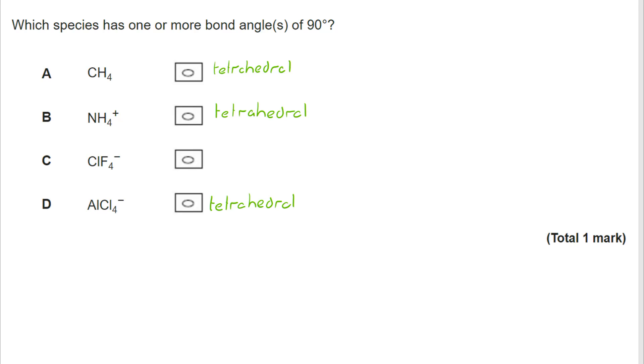AlCl4 minus, well we know that AlCl3 is trigonal planar. If we add a bond and that bond is a normal covalent bond, we've got the extra electron on the Al, that's why it's AlCl4 minus, we know also that that is going to be tetrahedral.